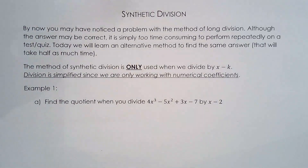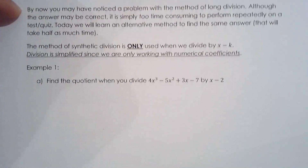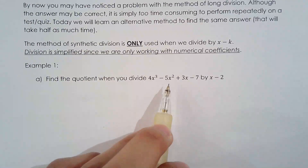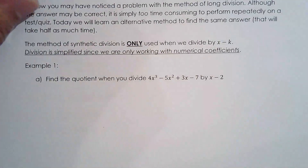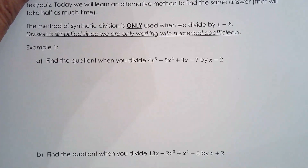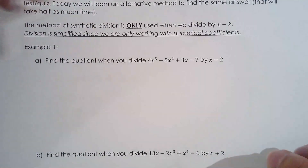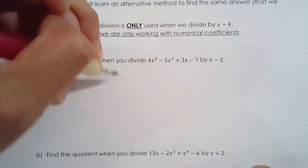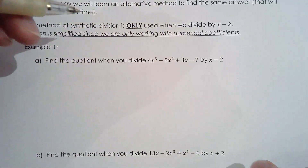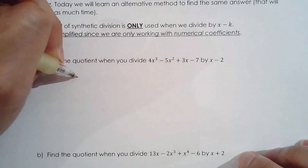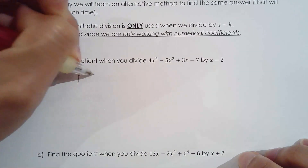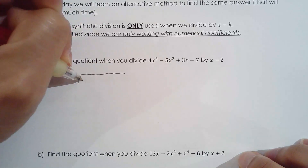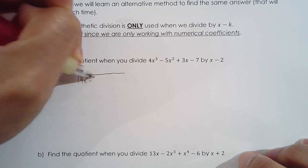Find the quotient when you divide 4x³ minus 5x² plus 3x minus 7 by x minus 2. I'm going to show you the long division and the synthetic division side by side so you can see how it works and understand what you're doing.